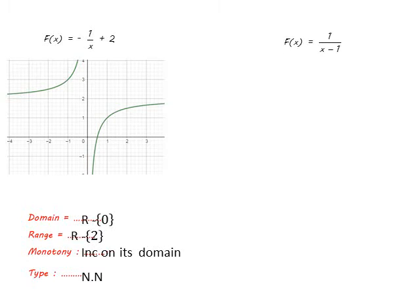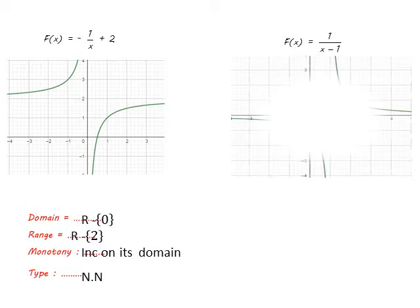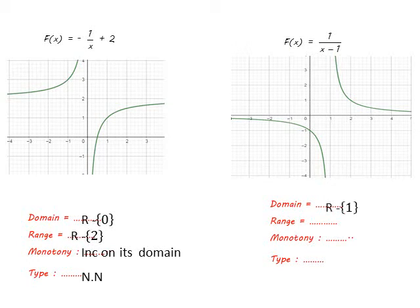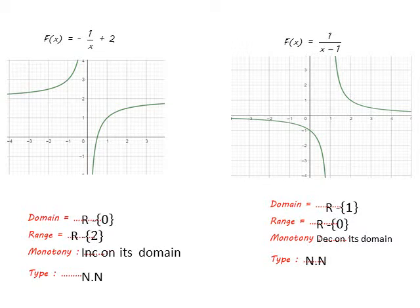For f(x) = 1/(x - 1), the point of symmetry equals (1, 0). The function is shifted only one unit to the right, so the domain is ℝ except 1 and the range is ℝ except 0. The function decreases on its domain, or decreases on ℝ except 1. It is neither even nor odd.